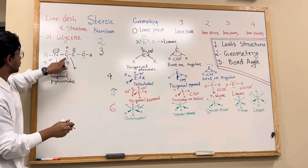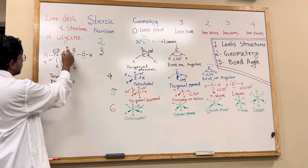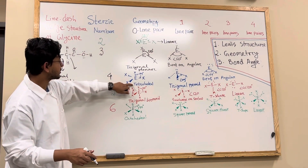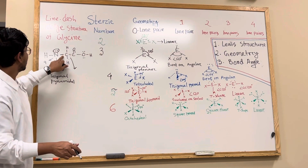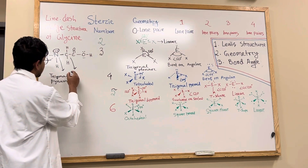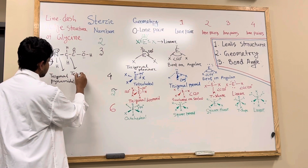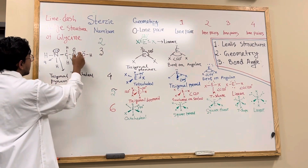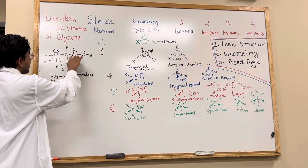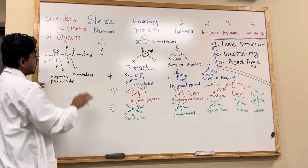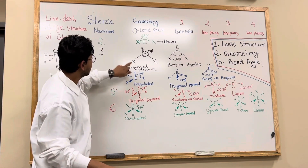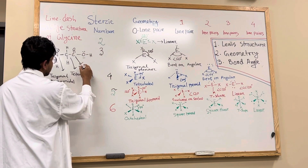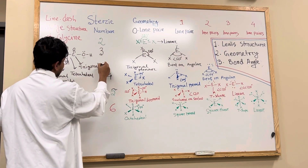For the first carbon, it has 1, 2, 3, 4 — that means steric number 4, which is tetrahedral because it has no lone pair, so it will be tetrahedral. For the second carbon, you can see 1, 2, 3 — steric number 3 and no lone pair — so it will be trigonal planar.